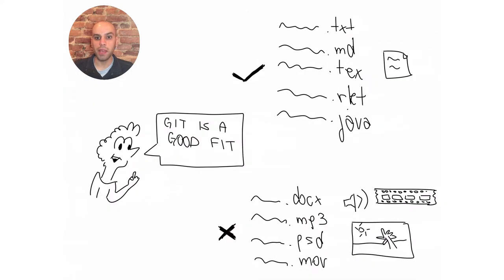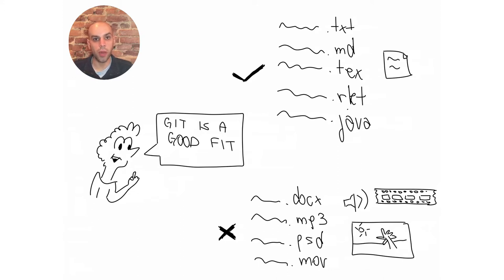So Alice thought, maybe Git is a good fit. If you have a project that is similarly based on plain text files, it may be a good fit for you as well. Those files may be just prose or recipes or maybe source code for software. As long as it's plain text, Git can tell the difference between different versions and can help Alice along the way and can help you as well.